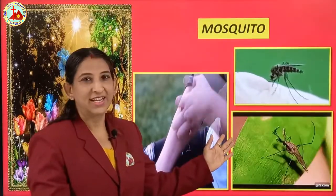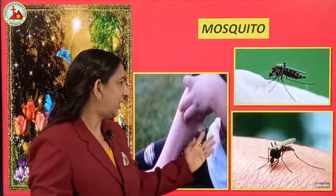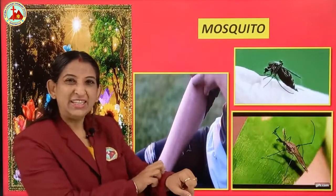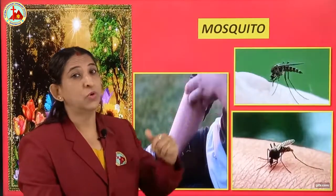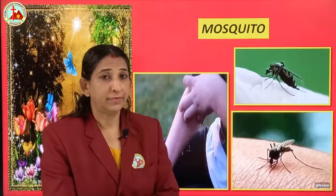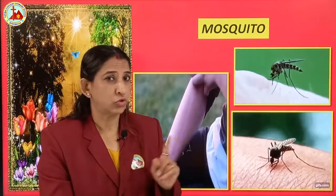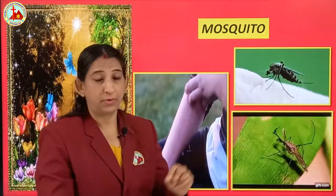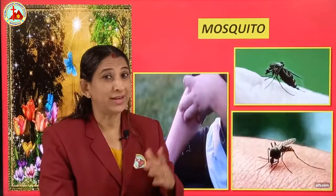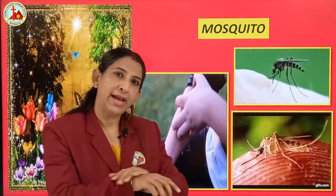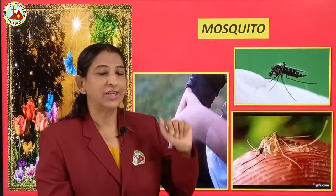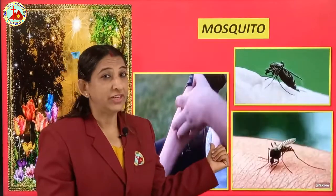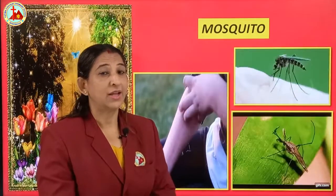Next is mosquito. When they bite, we get itching, and we can even get malaria from these mosquitoes. Do you listen to your mummy when she says don't go out in the evening or night to play? Because they mostly bite at night time. We should apply Odomos or put on Good Night to make them run away.